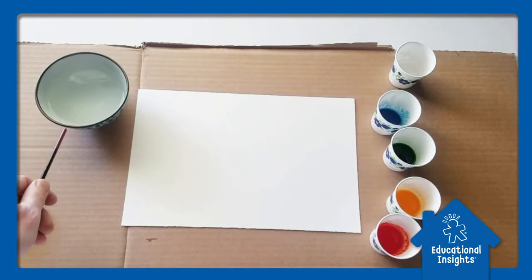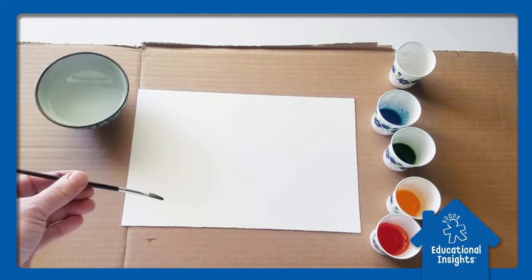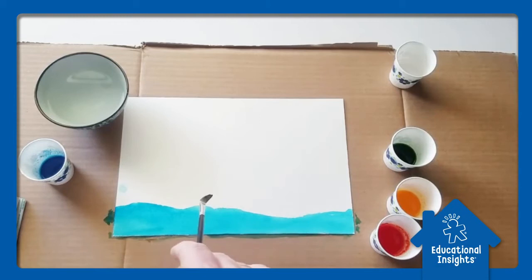You might also need a second bowl of water just to clean your brush. Now let's paint something. How about an ocean scene? So I want to put a little beach here, but I realize I don't have any brown.